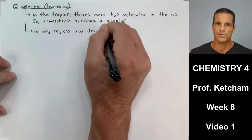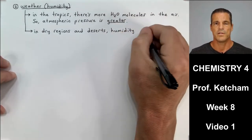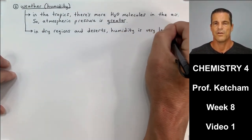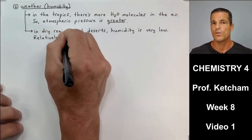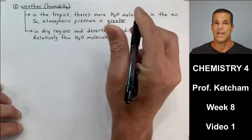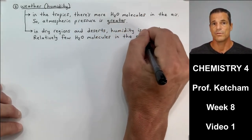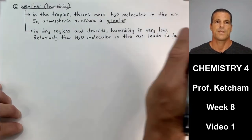Well, the opposite is true in dry regions and in deserts around the world. Humidity is very low. Air is very dry. Relatively few water molecules in the air or in the atmosphere leads to a lower atmospheric pressure.